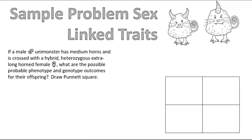So now let's look at the problem. If a male Unimonsters has medium horns and is crossed with a hybrid that is heterozygous longhorn female, what are the possible probable phenotype and genotype outcomes for their offspring? Draw a Punnett square.